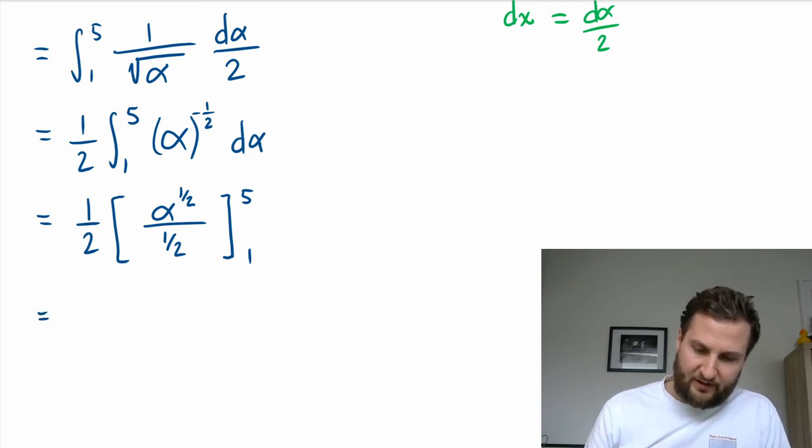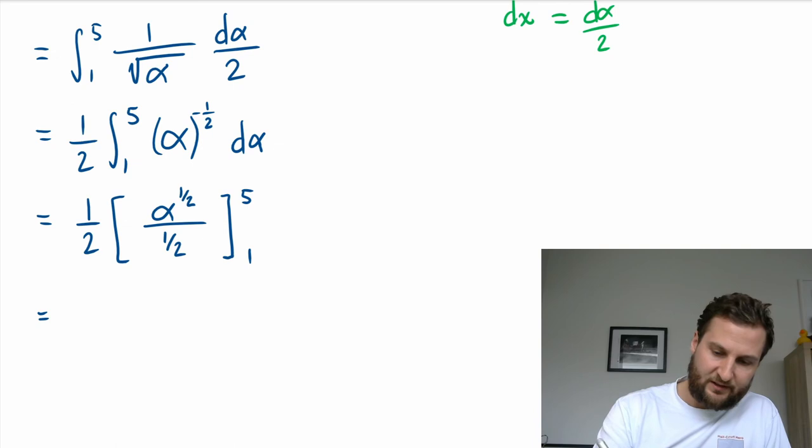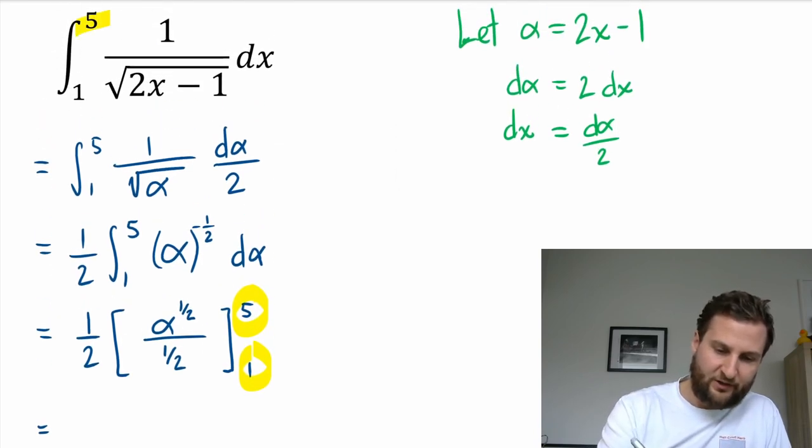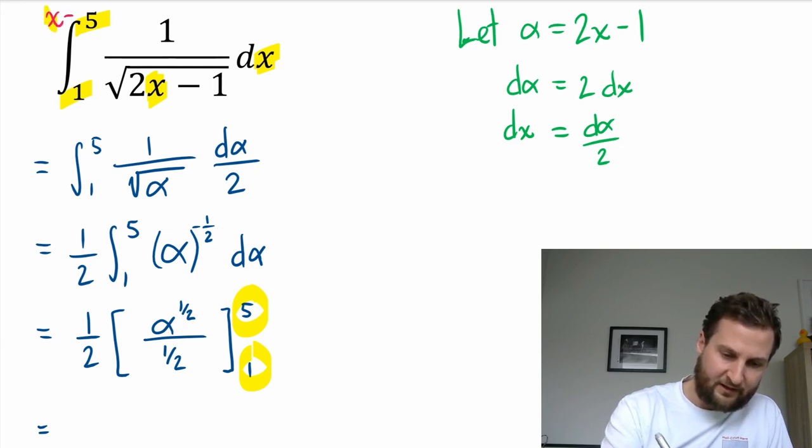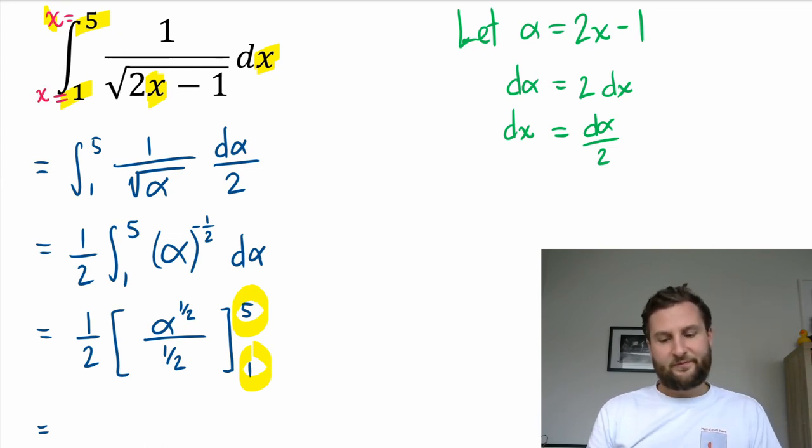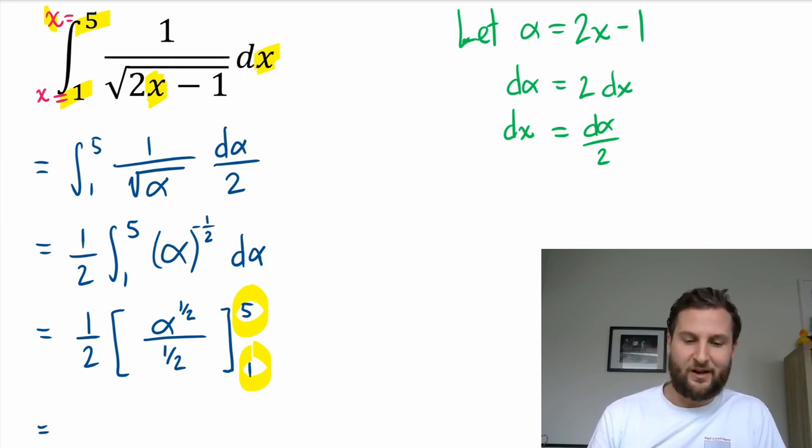So that is my integral. Now I could keep going here, but remember that this 5 and this 1 came from my original equation, and the original integral says that these numbers are actually x equals 5 - so that is x equals 5 - and the lower limit is x equals 1. So I need to either convert those limits or I need to sub back to my original variable which is x. So before I move on, I need to sub back.